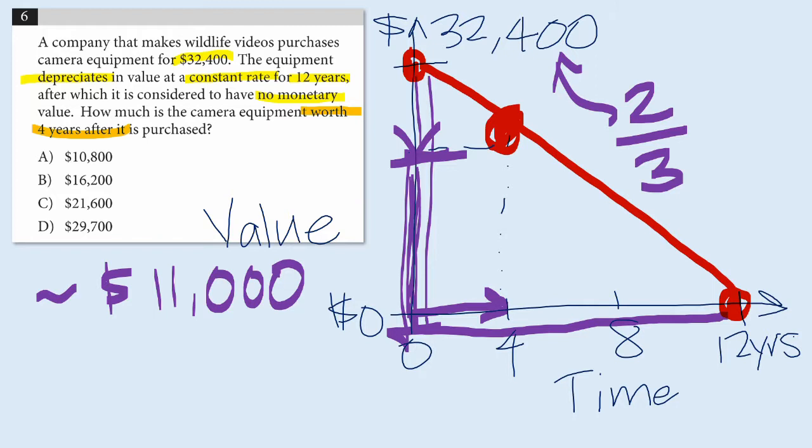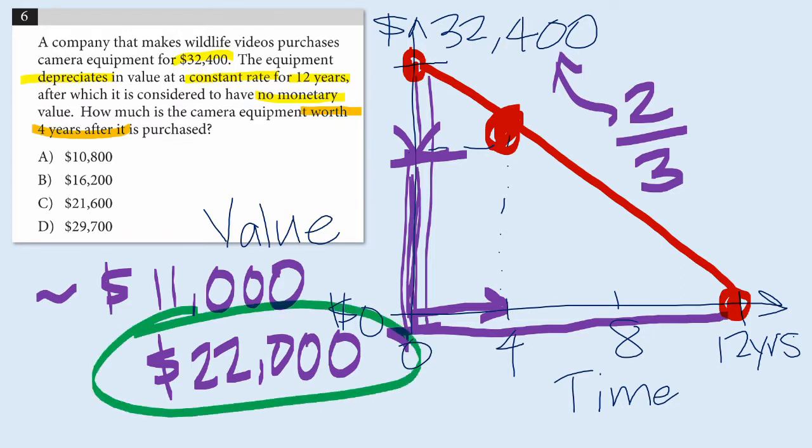So two-thirds is going to be about $22,000. Does that make sense? Which answer choice is about $22,000? Well we see that that's answer choice C, and in fact answer choice C, $21,600, is the correct answer.